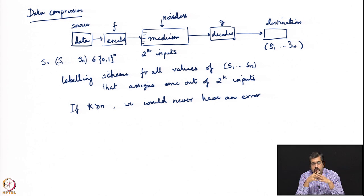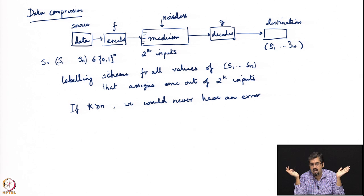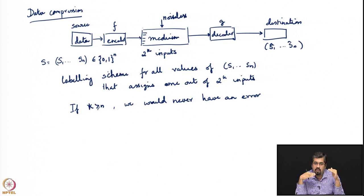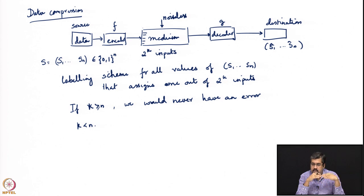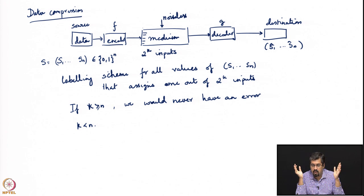The challenge comes because of compression — you do not have as big a shelf to accommodate all possible books. We are therefore in the regime where k is less than n: the number of possible inputs is smaller than the number of possible values of the source.